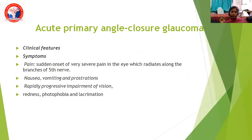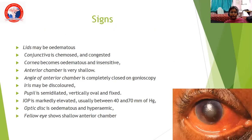Coming to acute primary angle closure glaucoma: symptoms include sudden onset severe pain in the eye radiating along the branches of the fifth nerve, nausea, vomiting, and prostration. There is rapid impairment of vision due to corneal edema, redness, photophobia, and lacrimation. Signs include edematous lids, chemosed and congested conjunctiva, edematous and insensitive cornea, very shallow anterior chamber, completely closed angle on gonioscopy, discolored iris, semi-dilated vertically oval and fixed pupil, IOP markedly elevated between 40 and 70 mmHg, edematous and hyperemic optic disc, and a shallow anterior chamber in the fellow eye.